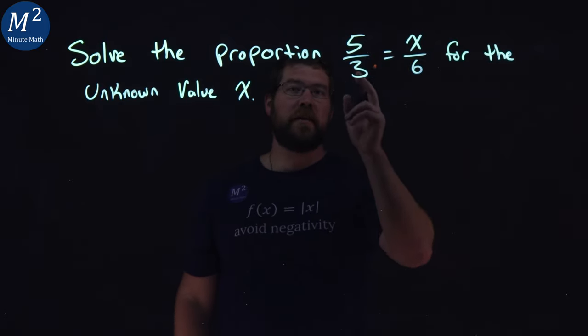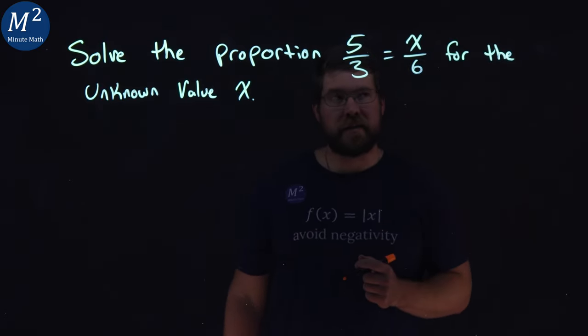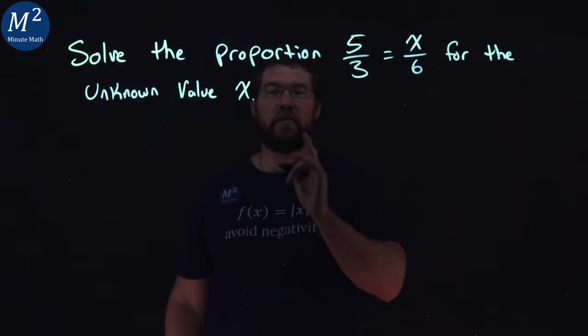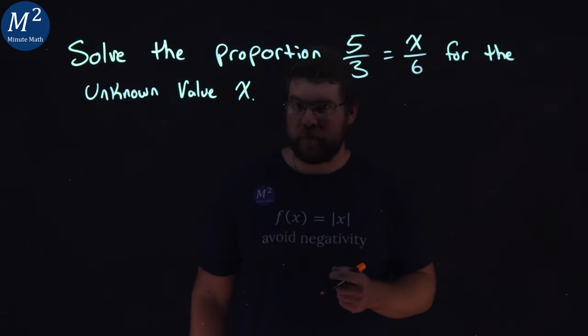Solve the proportion 5 over 3 equals x over 6 for the unknown value x. Let's learn.